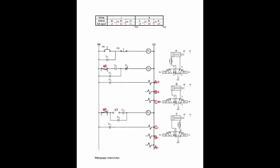Let us look at all the actions in group 1 under the control of group control relay R1. When R1 turns on, contact 2R1 is closed. Since A plus is the first action in this group, A plus is activated immediately without going through any limit switch. When A plus is completed, A1 is activated. A1 triggers B plus. When B plus is completed, B1 is activated. B1 triggers C plus. When C plus is completed, C1 is activated. Since C plus is the last action in this group, C1 triggers the next group control relay, R2.